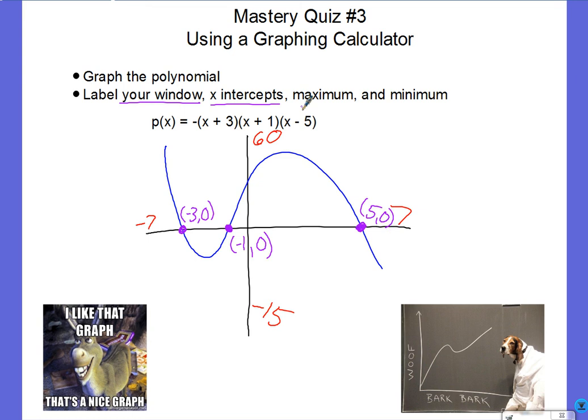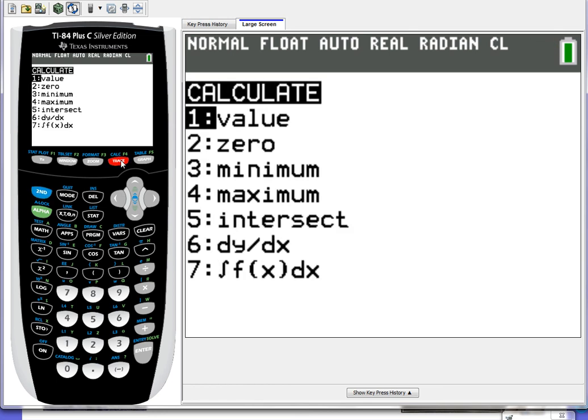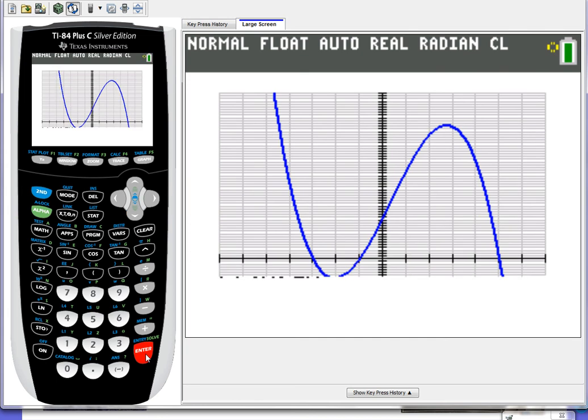Now I have to find my maximum and my minimum. Those ones are going to be a little more complicated. Here's our max. And here's our min. We need our calculator to do that for us. So I'm going to go to my calculator. And I needed to calculate something. So I'm going to press second, calc. And I need a maximum. So here we go. Maximum.